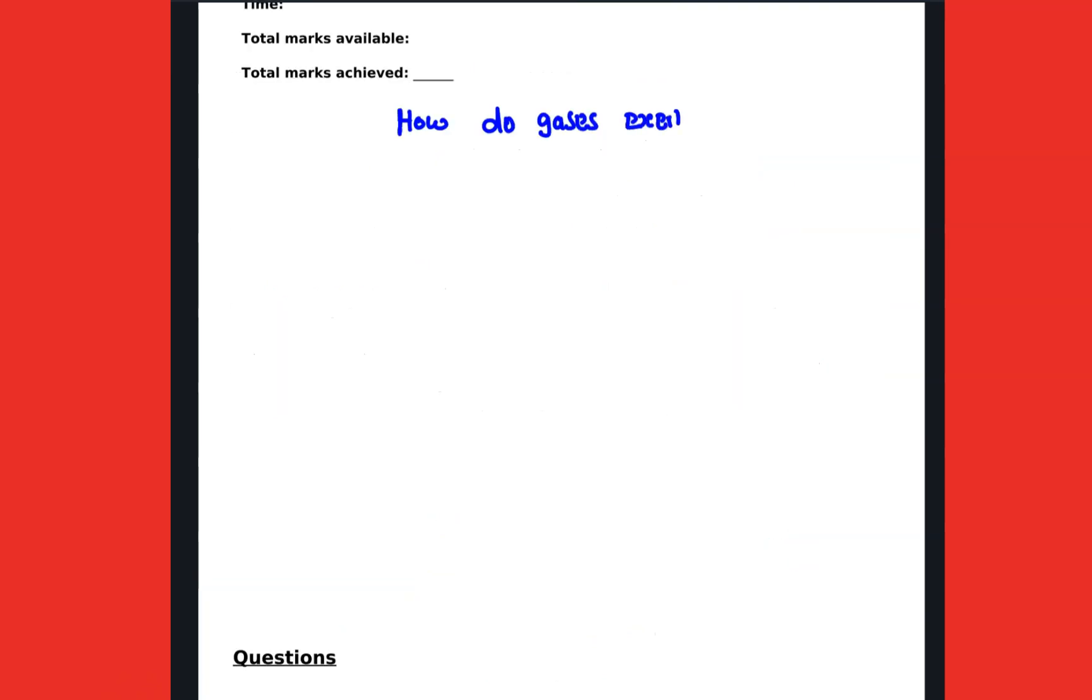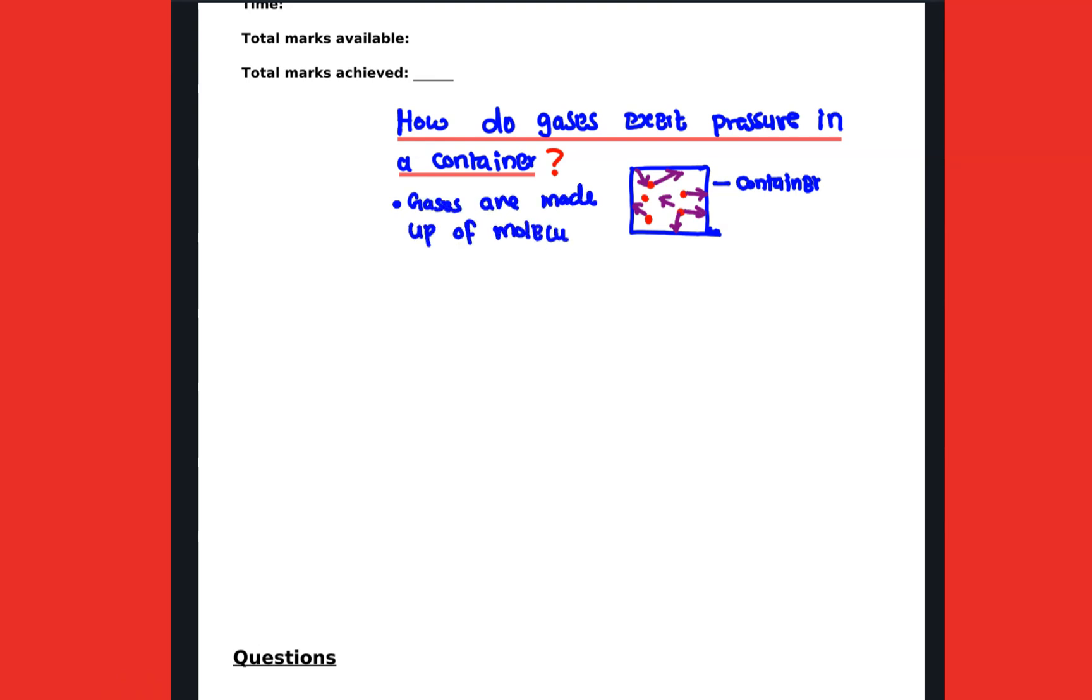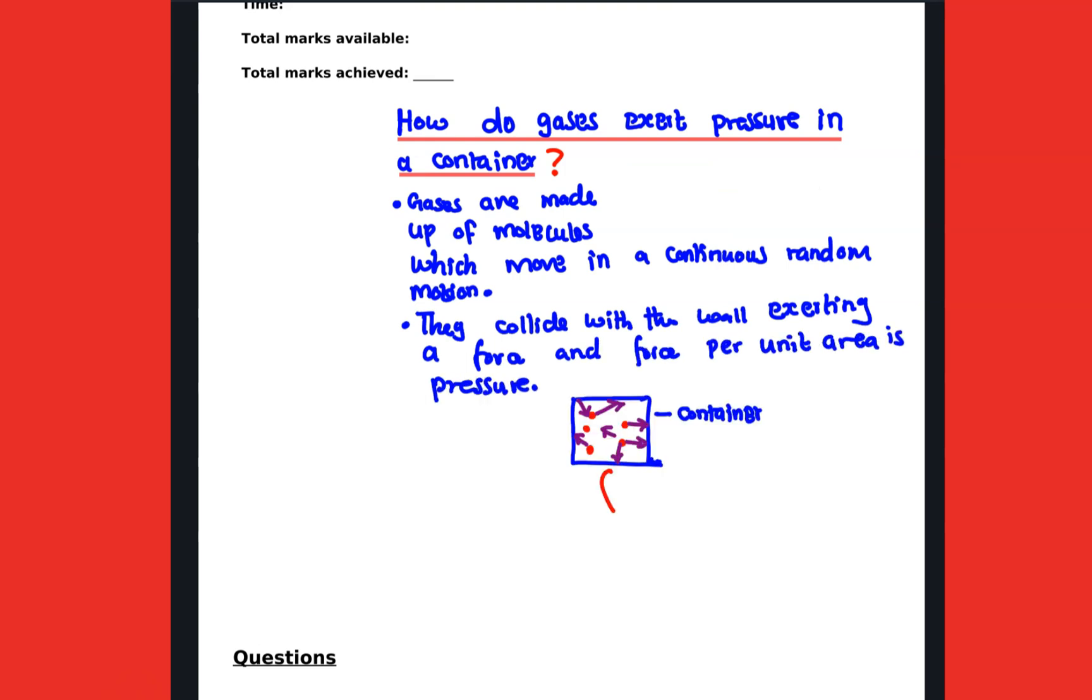There is another section here I just felt that I have to share with you. How do gases exert pressure in a container? This is a very important question that you have to know for the purpose of your exam. Remember, a gas is made of molecules and these molecules keep on moving in random motion. And in the process they collide with the walls of their container, exerting a force, and the force per unit area is pressure. So we are going to say gases are made of molecules which move in a continuous random motion. They collide with the walls, exerting a force, and force per unit area is pressure.